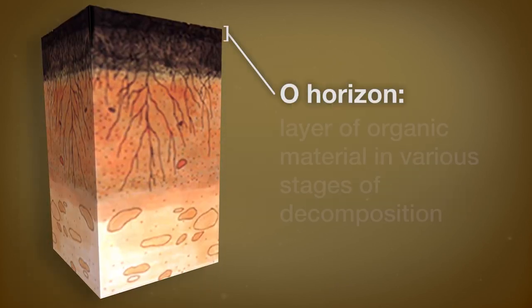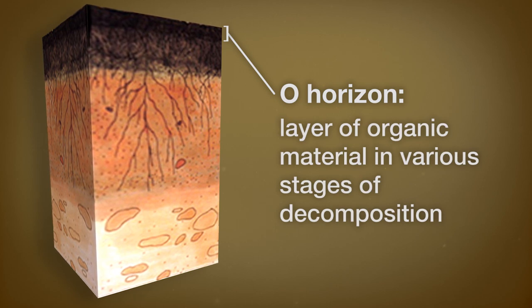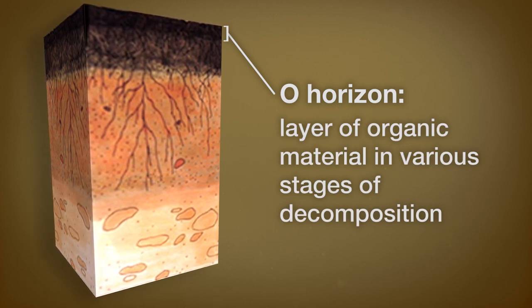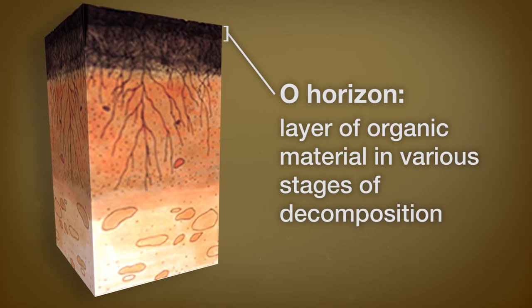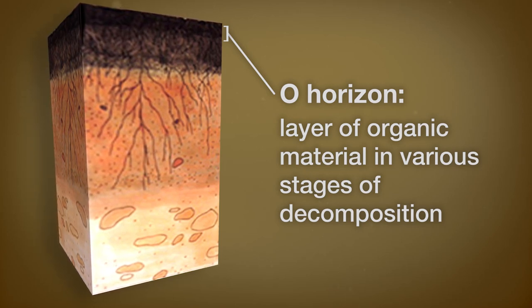The O horizon, also called the organic horizon, is a layer of organic material such as leaves, needles, and twigs, all in various stages of decomposition. The O horizon is most pronounced in forest soils and some grasslands.